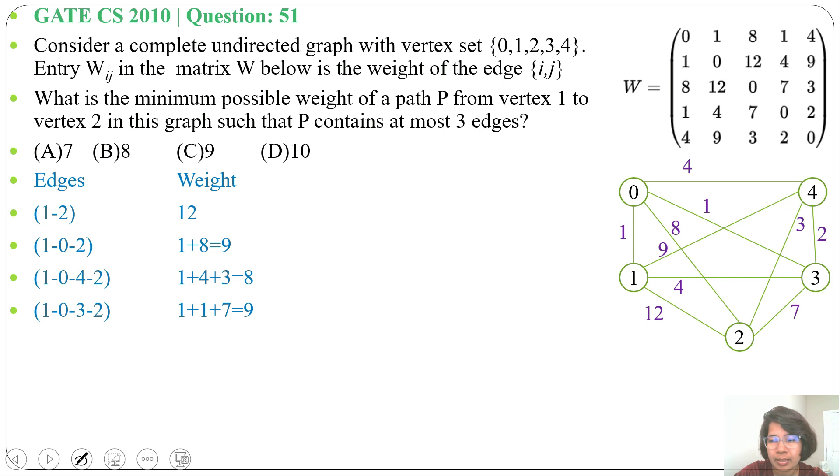We can also apply Dijkstra's algorithm for finding shortest path between pair of vertices. Let me apply Dijkstra's algorithm taking 1 as source. This cost will be 0 and all other vertices cost will be infinite. Now with 1 all are adjacent, so let me relax all the vertices. Vertex 0 cost will be 1, vertex 4 cost will be 9, vertex 3 cost will be 4, vertex 2 cost will be 12. So shortest is 1, so we will go from 1 to 0.